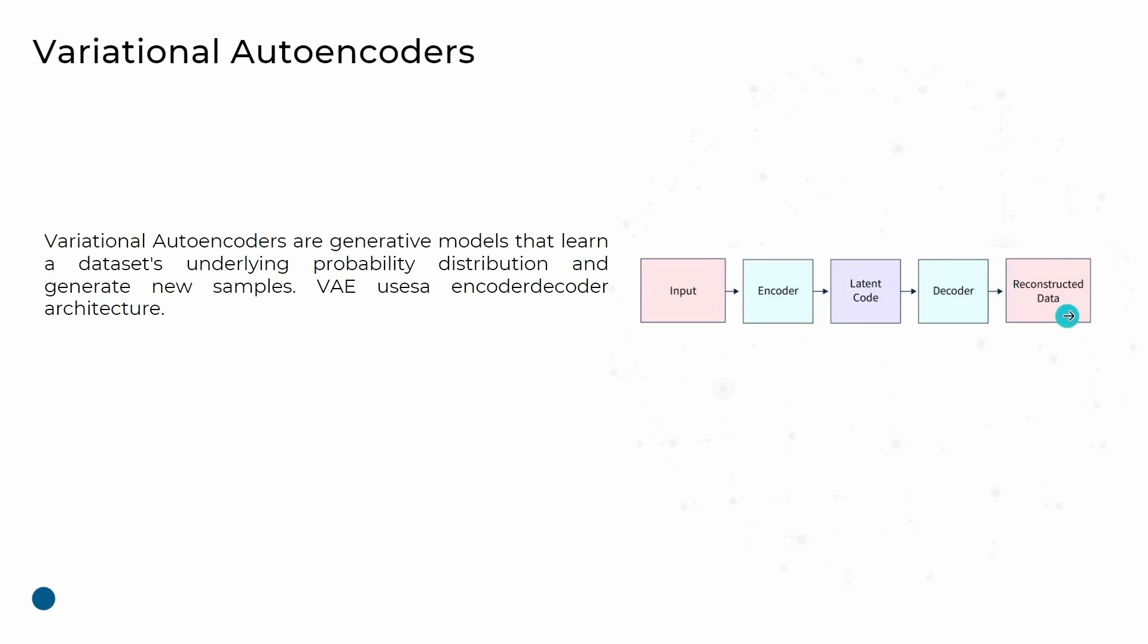In VAE, we have input, encoder, latent code, decoder, and reconstructed data. The encoder is responsible for compressing the input data (an image) into a lower-dimensional space known as latent space. Instead of encoding data into a single point, VAE encodes it into a distribution like a Gaussian or normal distribution. The encoder outputs two things for each input: the mean and variance of a latent variable. This allows the model to sample different points from the latent space, which is crucial for generating new data.